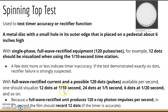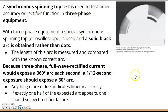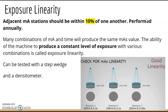That spinning top information has appeared in board review, so make a flashcard. The synchronous top is used for three-phase equipment and produces arc images rather than dots. So: arcs equal three-phase, dots equal single-phase.